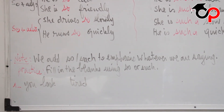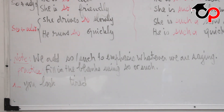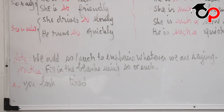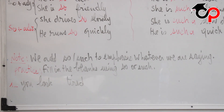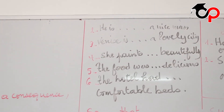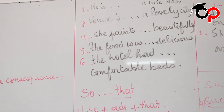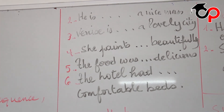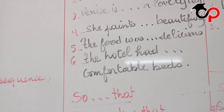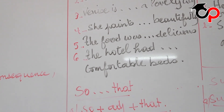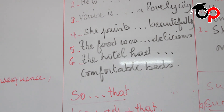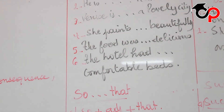Now let's practice: when do we use so and when do we use such? Fill in the blanks using so or such. Sentence 1: you look ___ tired. Sentence 2: he is ___ a nice man. Sentence 3: Venice is ___ a lovely city. Four: she paints ___ beautifully. Five: the food was ___ delicious. Six: the hotel had ___ comfortable beds. I'll leave you one minute to do it, then we'll correct.